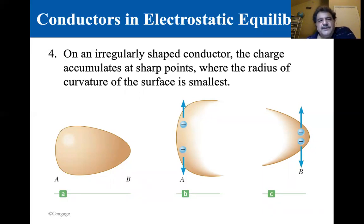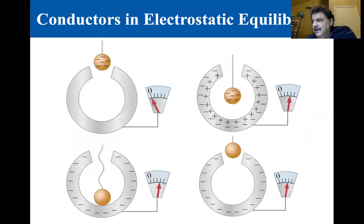So they tend to accumulate at these sharp points. Those are the four statements about conductors and electrostatic equilibrium. Now here is a little experiment - I think it's called Faraday's Ice Pail experiment.